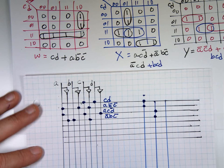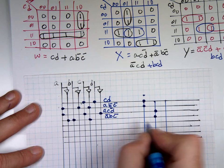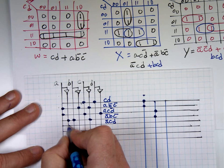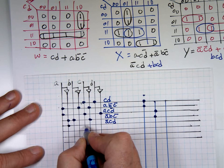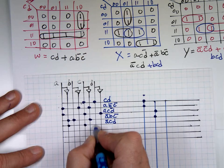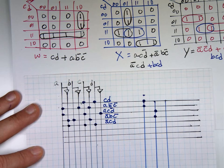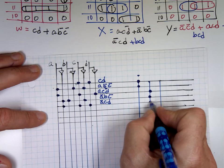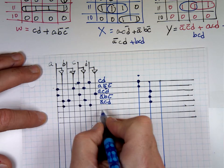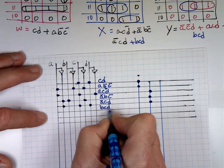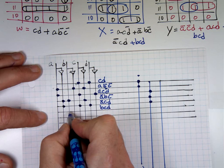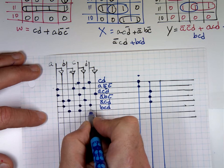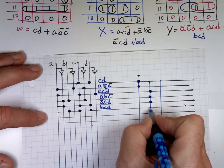Next is ĀCD — attach Ā, C, D — and that goes to X as well. And the last shared term is BCD — that happens to be common to both X and Y.